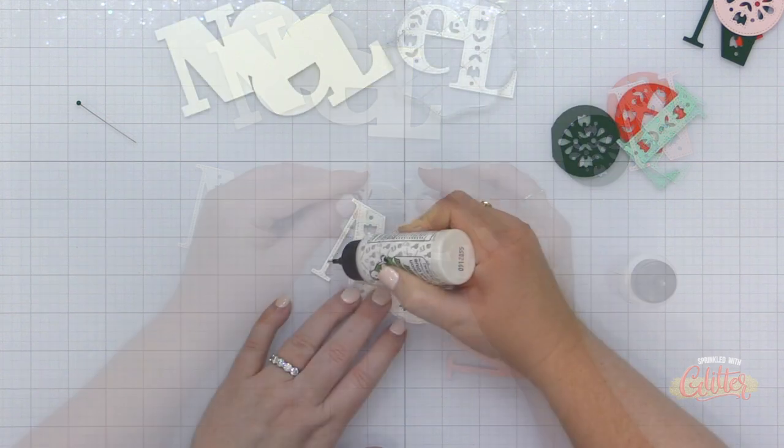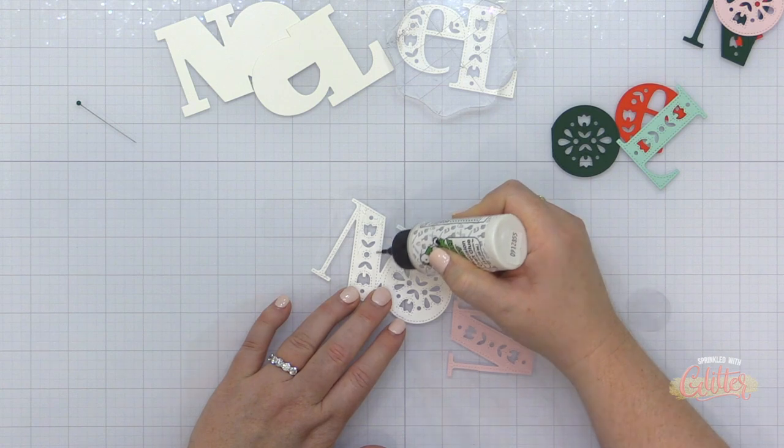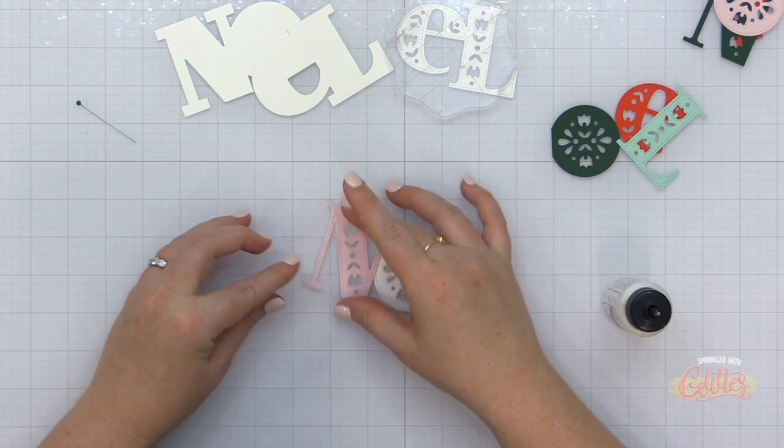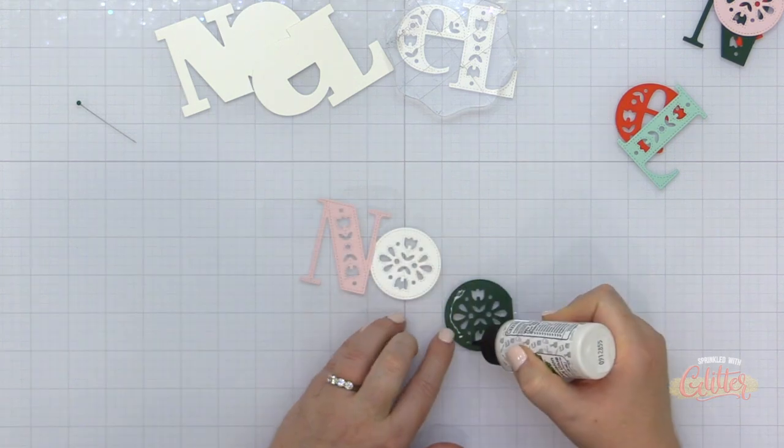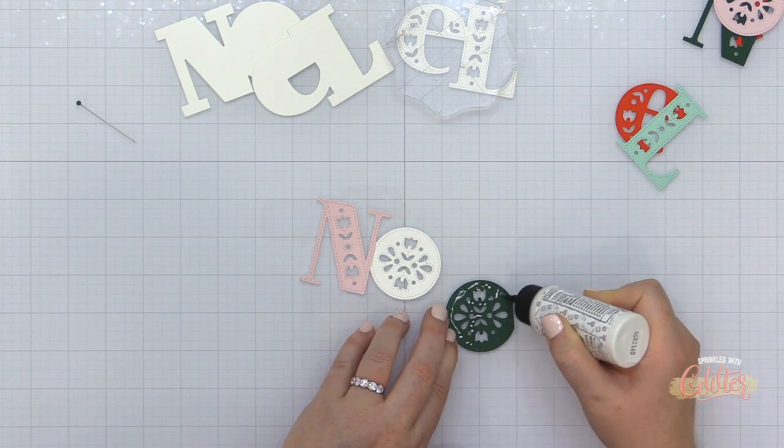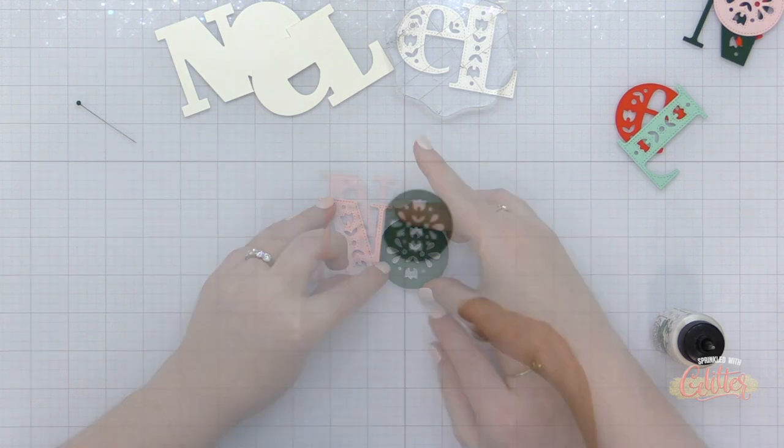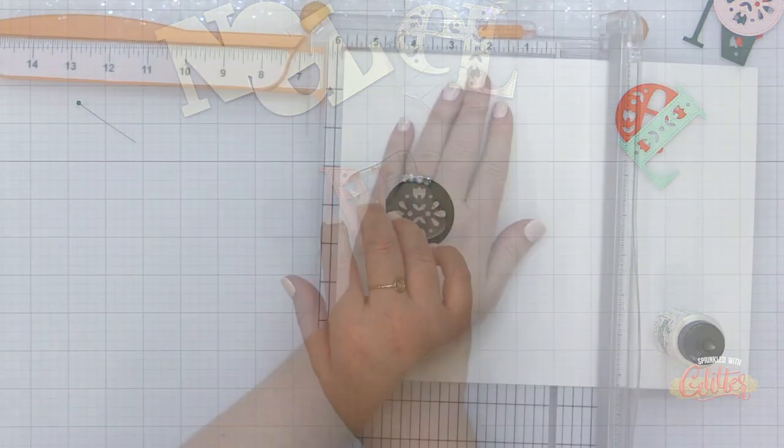To add a little bit of dimension behind these die cut letters, I did die cut those detail pieces once for the N and the O, and twice for the E and the L. So the E and L are going to sit up just slightly higher than the N and the O. I didn't want to put them on the same plane, because they are going to overlap and I didn't want it to get weird and bulky in the area where it did overlap.